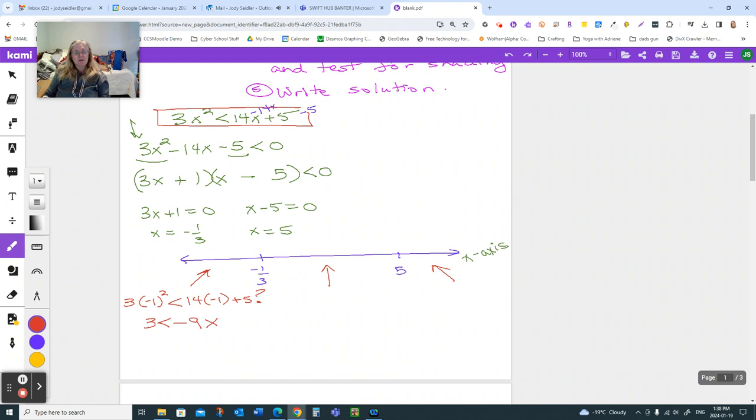In between negative one-third and five, I like to use zero, because the math is super easy then. And that's going to add, and what I'm finding out is, is zero less than five? Yes, it is. So I know right now, for sure, I'm going to be shading in this middle.